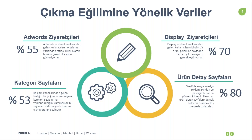Ürün detay sayfalarından sağlanan çıkış oranları da yüksek. Re-marketing reklamlarında kullanıcıların gezmiş olduğu ürünleri gösterdiğiniz senaryoda, kullanıcı display reklamına tıklayınca otomatik olarak ürün detay sayfasına yönleniyor. Sosyal medya paylaşımları veya kişiler arası paylaşılan linkler sonucunda da kullanıcı direkt olarak spesifik bir ürüne yönlendiği için, ürün detay sayfasına gelen trafiğin %80'i direkt olarak bounce ediyor.